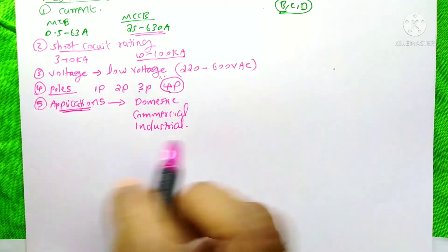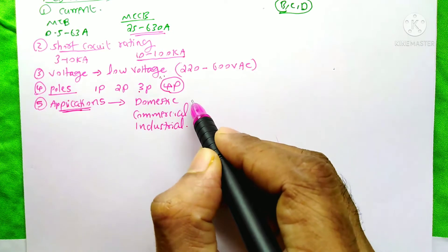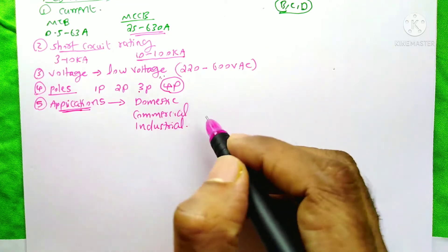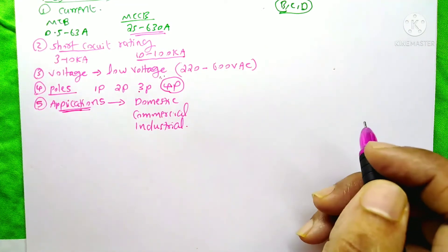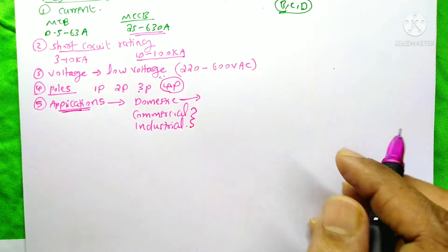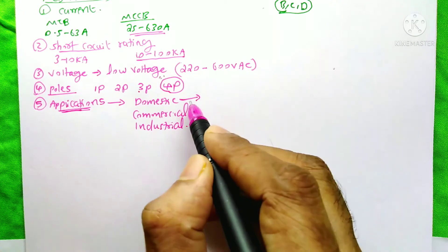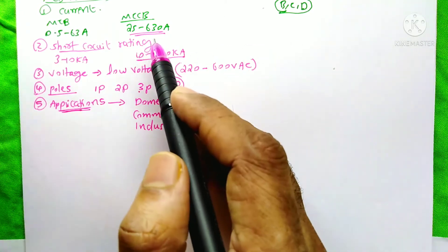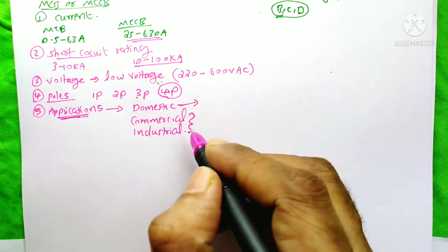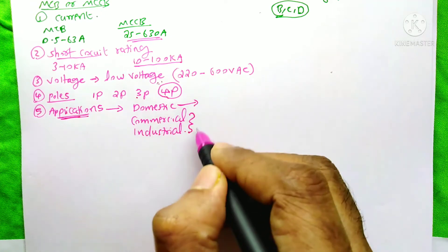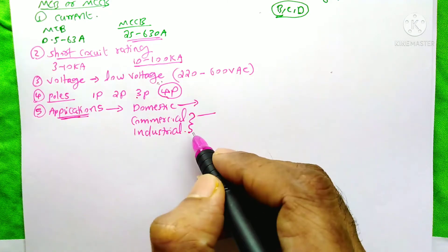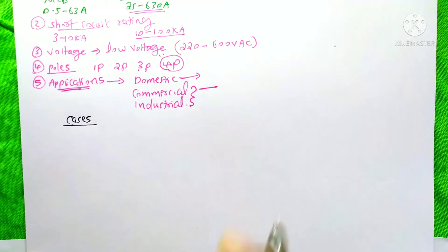Regarding applications, the MCB can be used for domestic, commercial, or industrial purposes. The MCCB is generally used only for commercial and industrial purposes. If you want to install an MCCB at home there is no problem, but it is a little bit costly, so it is generally used only on commercial and industrial platforms. Commercial means very large office buildings, and industrial means factories and big manufacturing companies.